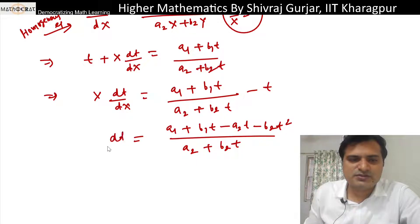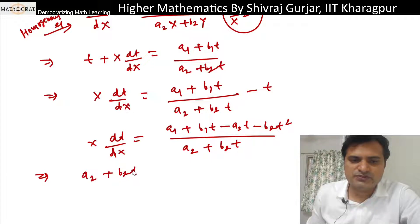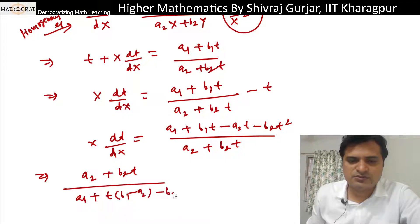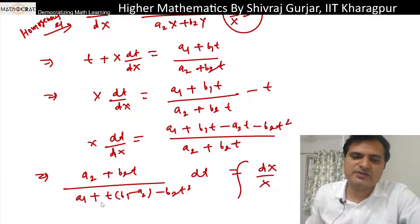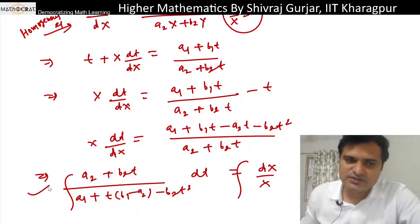X·dt/dX = [a1 + b1t - a2t - b2t²] / (a2 + b2t). This gives dt/dX. Taking t-terms to one side: (a2 + b2t) / (a1 + b1t - a2t - b2t²) dt = dX/X. This is now a variable separable form and can be solved.